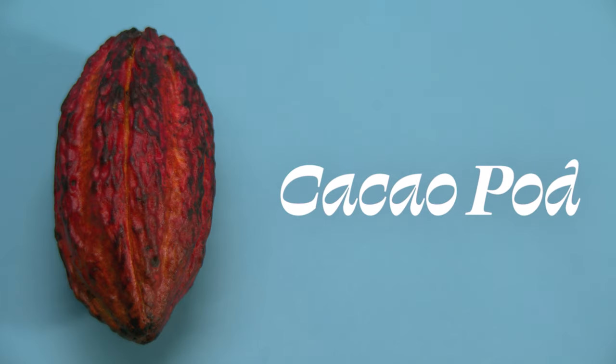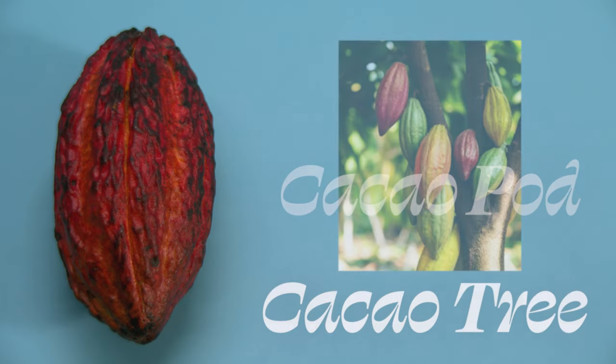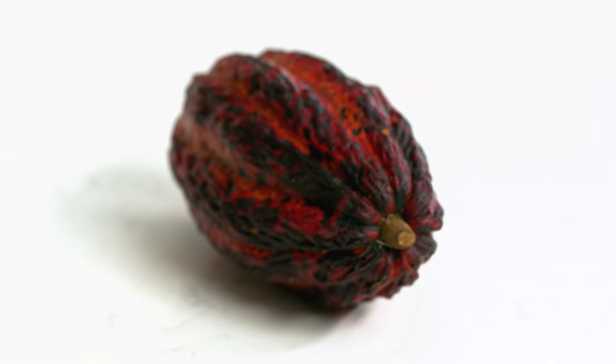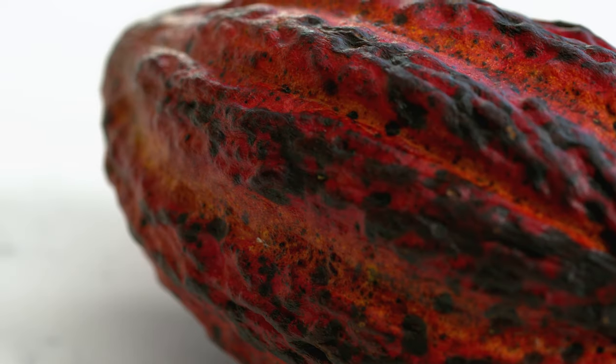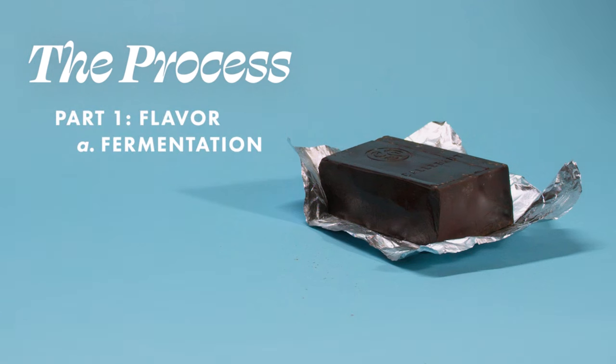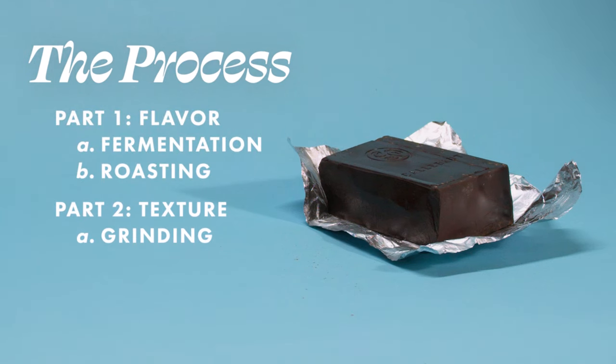This is a cacao pod — the fruit of the Theobroma cacao tree. Inside this pod we've got sugars, proteins, and fats. We have everything in here that we need to make a chocolate bar, it's just packaged up in inaccessible forms. We're going to unlock flavor by fermentation and roasting, and create texture through grinding, conching, and tempering. I'll explain what all of these things are as we go.